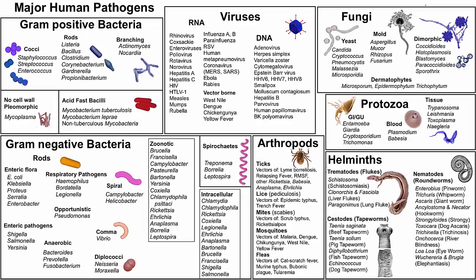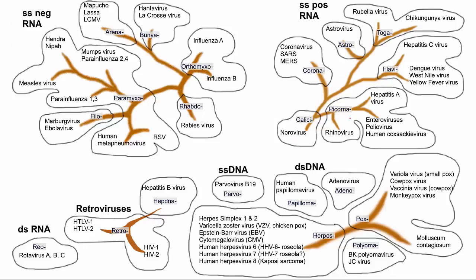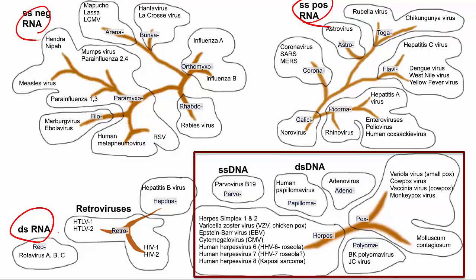This is our human pathogen map and for this video I'm focusing on viruses, most specifically on the DNA viruses and very specifically on herpes simplex virus. This is our phylogenetic view of viruses showing single-stranded RNA viruses, positively stranded RNA viruses, double-stranded RNA viruses, and retroviruses. Today I'm focusing on double-stranded DNA viruses, specifically those within the herpes virus family, of which there are eight members. The two that are relevant to this video are HSV-1 and HSV-2.